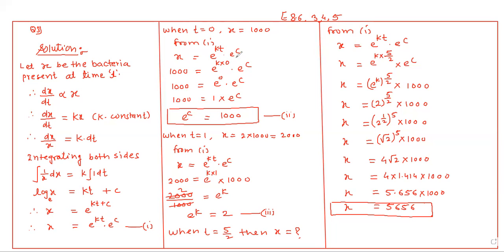It is written initially how much was the bacteria — 1,000. So if t is equal to 0, how much is the bacteria? 1,000. From equation 1, x equals e raised to kt into e raised to c. Substituting x equals 1,000 and t equals 0: 1,000 equals e raised to 0 into e raised to c, which is 1 into e raised to c. So e raised to c is equal to 1,000.